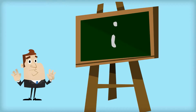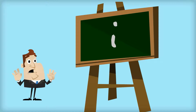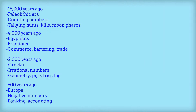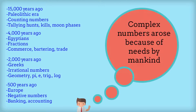This is a follow-up to my video, Understanding the Number I. Here are a few definitions and examples of what we used in the previous video. In that video, I took a needs-based approach to explaining the number I, showing how complex numbers arose because of needs by mankind. Today I want to take a more geometric approach.